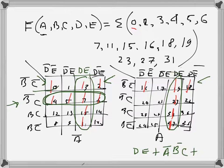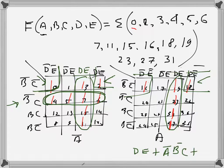The remaining ones — one here, one here, and these two — form one group because they are corner cells common to both K-maps. Since the group spans both K-maps there is no a variable. What is not changing across this group is b̄, c̄, and ē, giving the term b̄·c̄·ē.